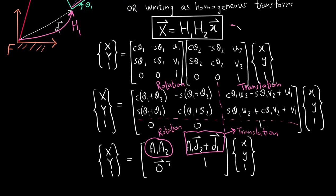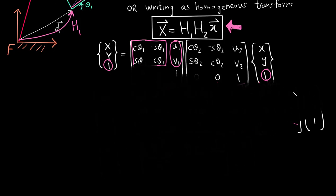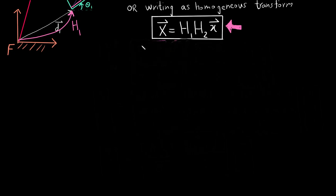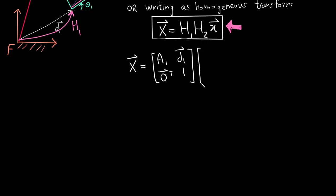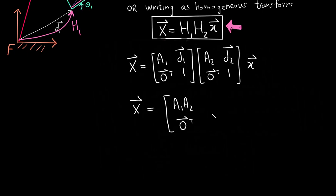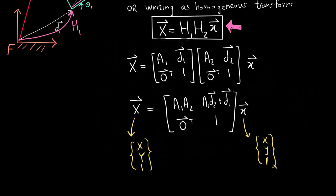To summarize: the big X and small x vectors each have a 1 appended at the end, and the homogeneous transform H contains a rotation matrix, a displacement vector, and a bottom row of two 0s and a 1. I can also write the same equation where h1 and h2 are each expressed in terms of their rotation matrix and displacement vector, and multiplying them in this block form gives the same result as before.